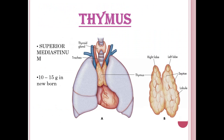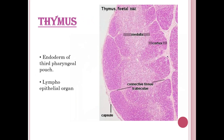The thymus gland is situated in the superior mediastinum of the thoracic cavity, in front of the trachea. It is present by birth, weighing 10 to 15 grams in newborns, and has two lobes — left and right. The thymus gland develops from the endoderm of the third pharyngeal pouch and is classified as a lympho-epithelial organ.